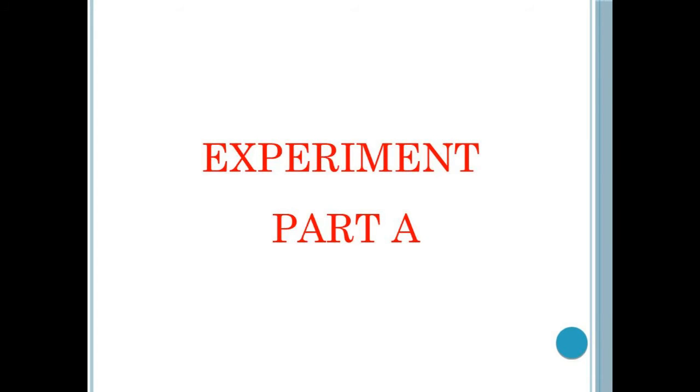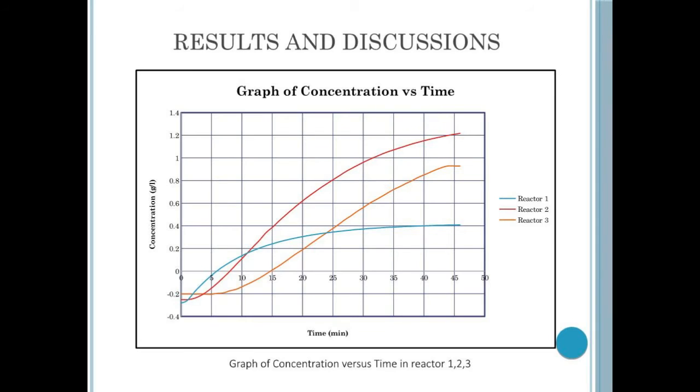For the first part of the experiment, we are going to determine the effect of step change input. This is the graph of concentration versus time. Since this is a step change input, there are two steady state values, which are the initial and final steady state value. The system is initially at rest before the concentration is introduced, which causes the change in equilibrium. Over a period of time, the system will approach a new steady state value and being at rest again.